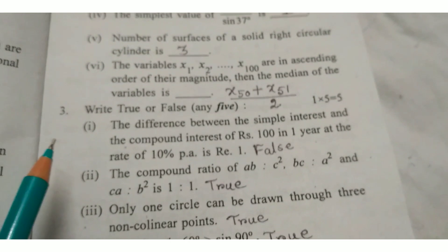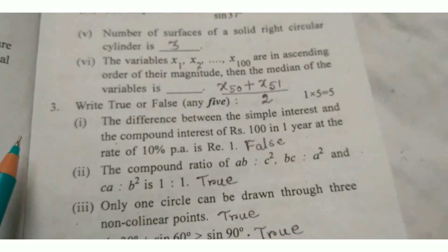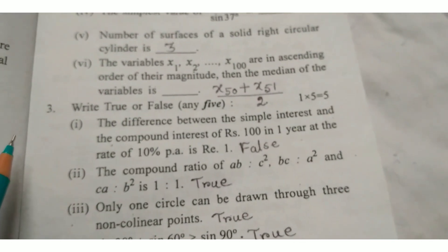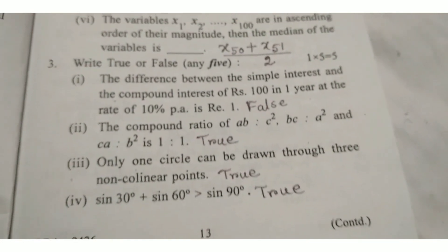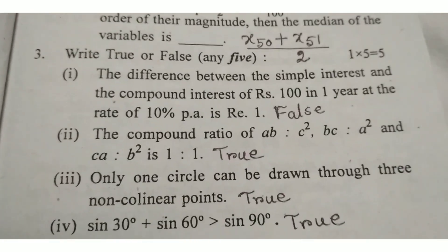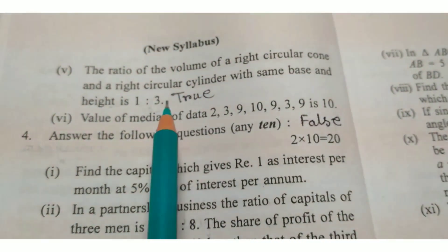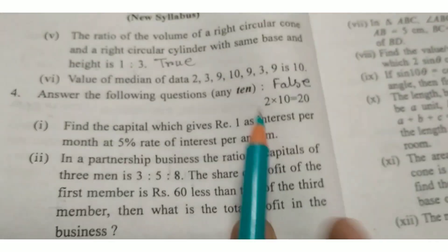Next, Question number 3: True or False, answer any 5. There are 6 questions here and you answer any 5. 6 questions, answer any 5.